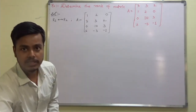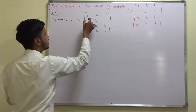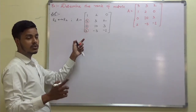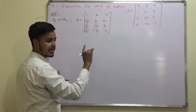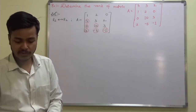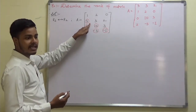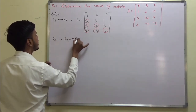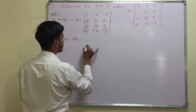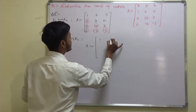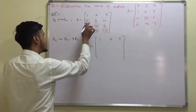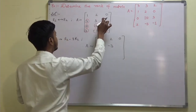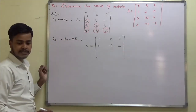Now the first element is 1. Below this there are three elements to make zero. The third row already has 0 in the first position. To make the second row's first element zero, apply r2 changes to r2 minus 3r1. Result: r1 stays as 1 2 0. For r2: 3 minus 3 is 0, 3 minus 6 is minus 3, and 2 as it is. So r2 becomes 0 minus 3 2.